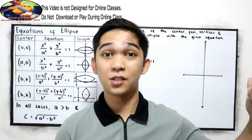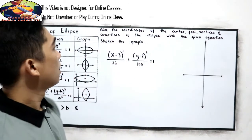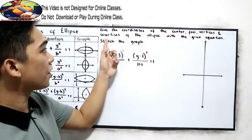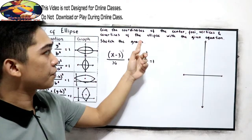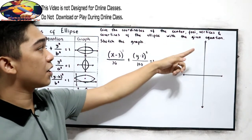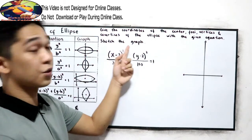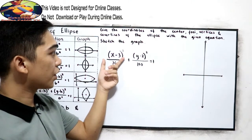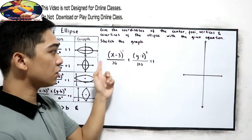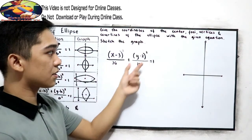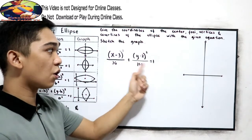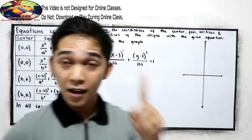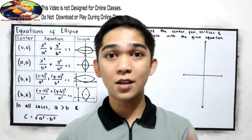Let's have this example. Give the coordinates of the center, foci, vertices, and co-vertices of the ellipse with the given equation, then sketch the graph. Our equation is: quantity (x minus 3) raised to 2 over 36, plus quantity (y minus 2) raised to 2 over 100, is equal to 1. Now, our first step: examine the equation.